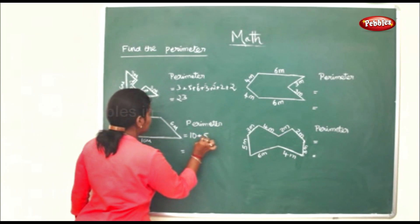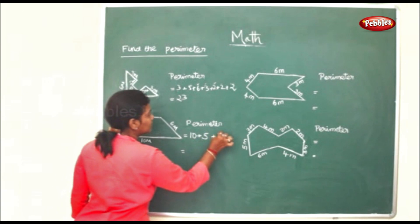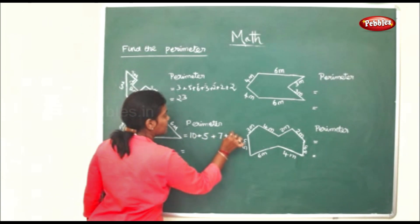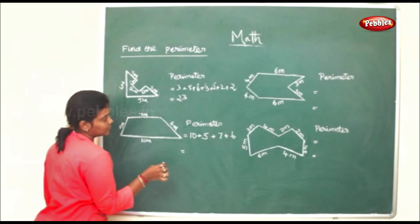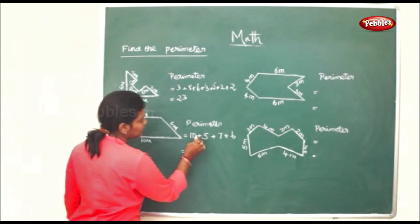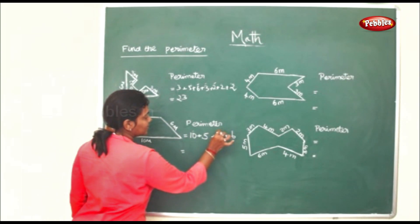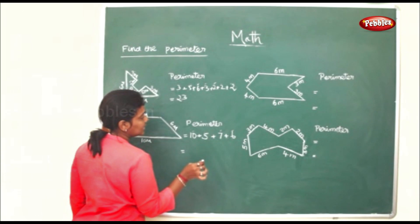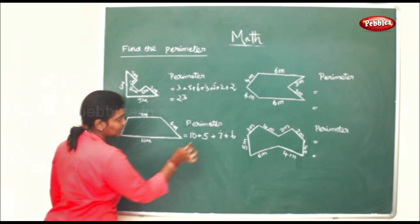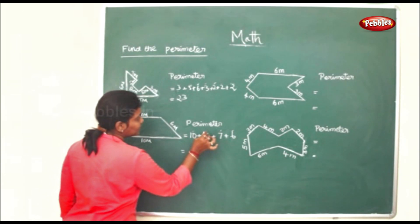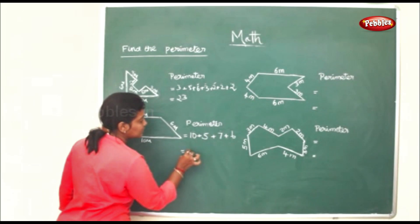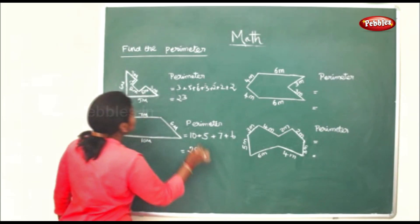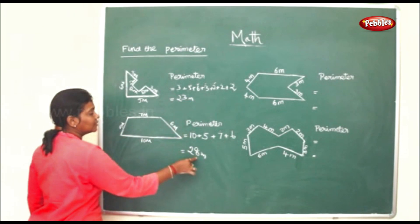For the next figure, the sum will be 10 plus 5 plus 5 plus 7 plus 6. So 10 plus 7 is 17, plus 6 is 23, plus 5 is 28 meters. Remember to write the unit: meters.